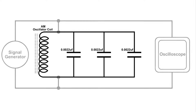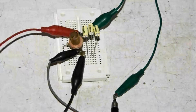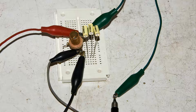I'm going to be using a signal generator to drive the tank circuit, and to see what is taking place with the tank circuit we're going to take a look with an oscilloscope. This is the completed circuit on the workbench — an oscillator coil from an AM radio, and three 0.0022 microfarad capacitors all in parallel.